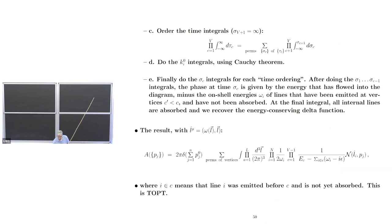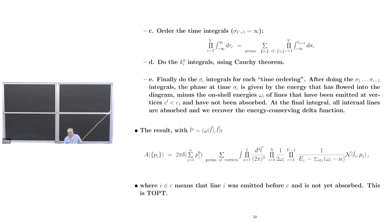You write the new energy delta functions as time integrals, getting one time integral for every vertex. To get all the different time integrals, you take the integral from minus infinity to infinity of each time and write them in terms of orderings — permutations of those times, which we label by sigma. For each such ordering, you integrate the time from minus infinity up to the next vertex, and the last vertex has maximum time infinity.